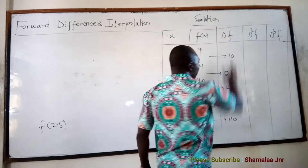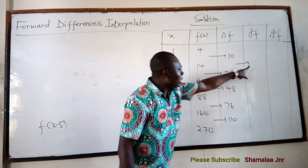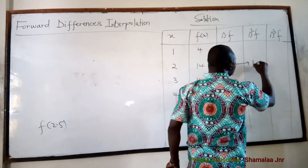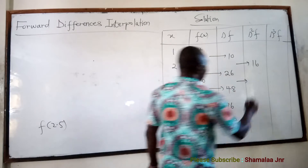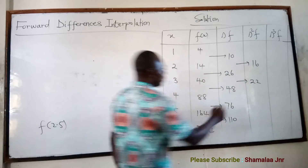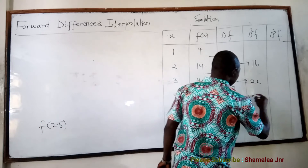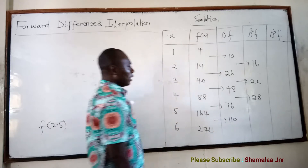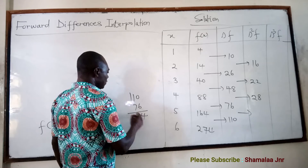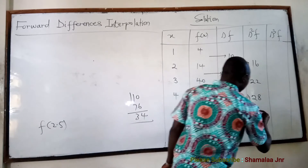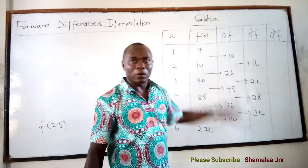Now let's move on to the second forward differences. We get 26 minus 10 equals 16. Then 48 minus 26 equals 22. Then 76 minus 48 equals 28. And finally 110 minus 76 equals 34. So the second forward differences are 16, 22, 28, and 34.